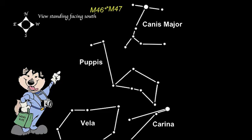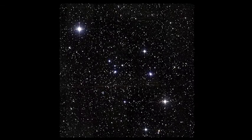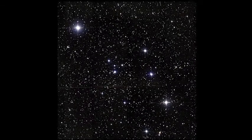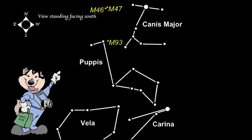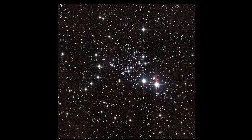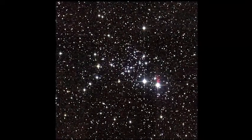M47 is only a degree away from M46, and is also an open cluster. It is only 1600 light years away from us. It has a magnitude of 4.2. The third Messier object in Puppis is M93, another open cluster. It has a magnitude of 6, and is about 3600 light years away.